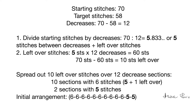Now we spread out the 10 leftover stitches over 12 decrease sections, by having 10 sections with 6 stitches (5 plus 1 leftover) and 2 sections with 5 stitches. So the initial arrangement looks like this: 10 sections with 6 stitches and 2 sections with 5 stitches.